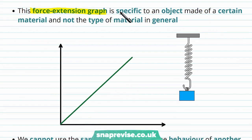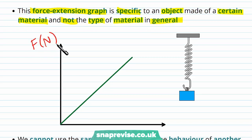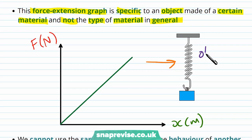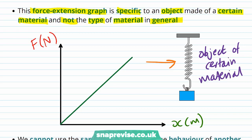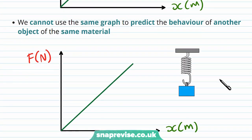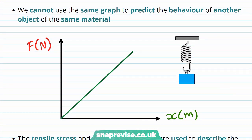This force extension graph is specific to an object made of a certain material, and not to the type of material in general. We put force on the y-axis and extension on the x-axis, but this graph is specific to this particular object. So this graph is unique to this spring made out of a particular material. A different spring with other dimensions wouldn't produce the same graph, even if it was made out of the same material. We could also have a wire — again the same material but a different object — and we'd get a different force extension graph.